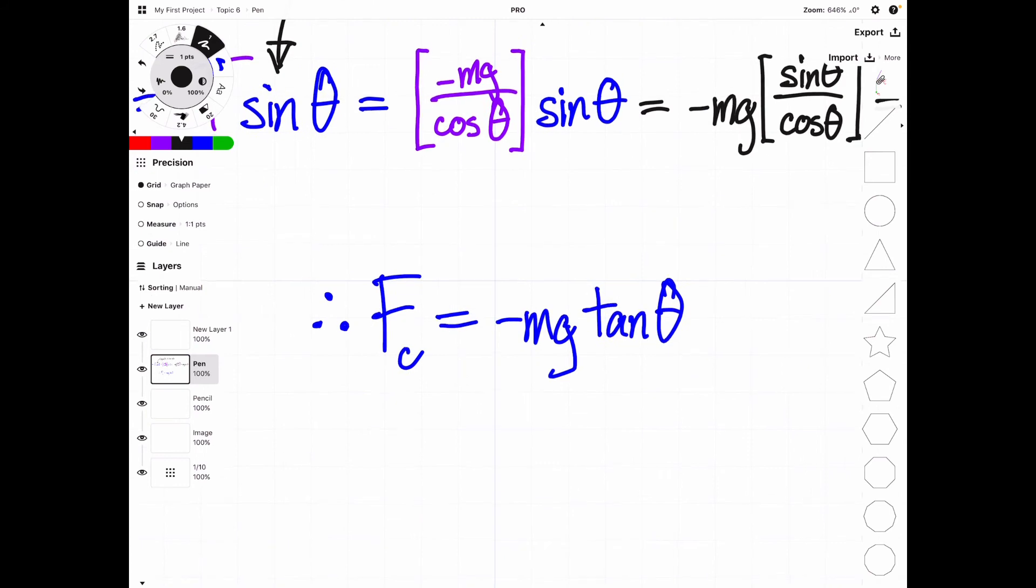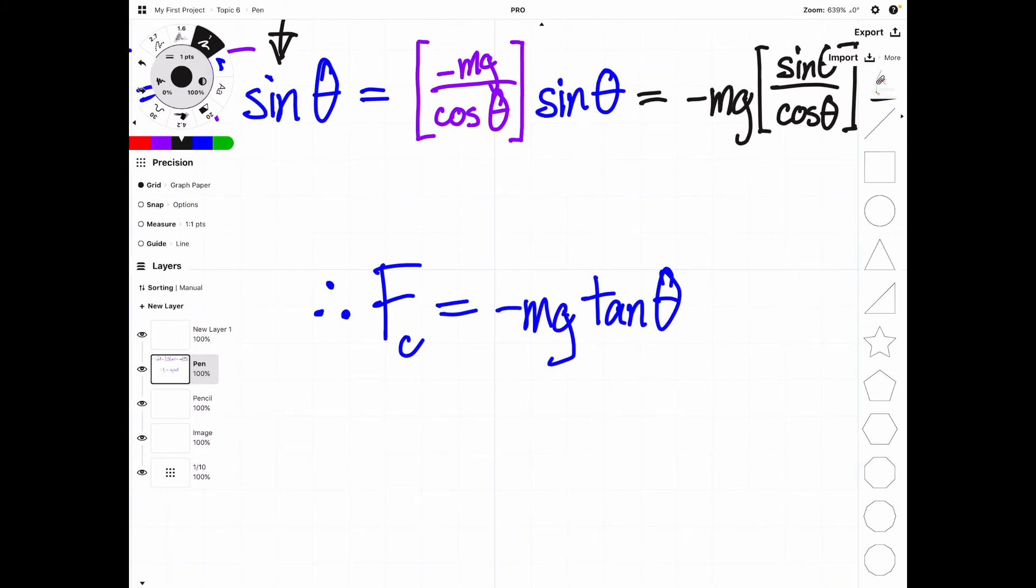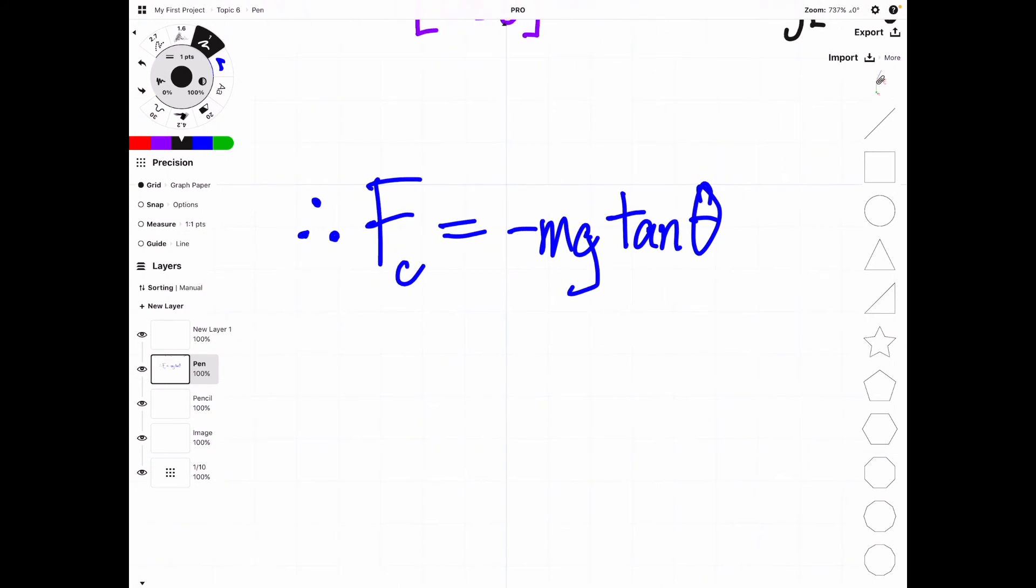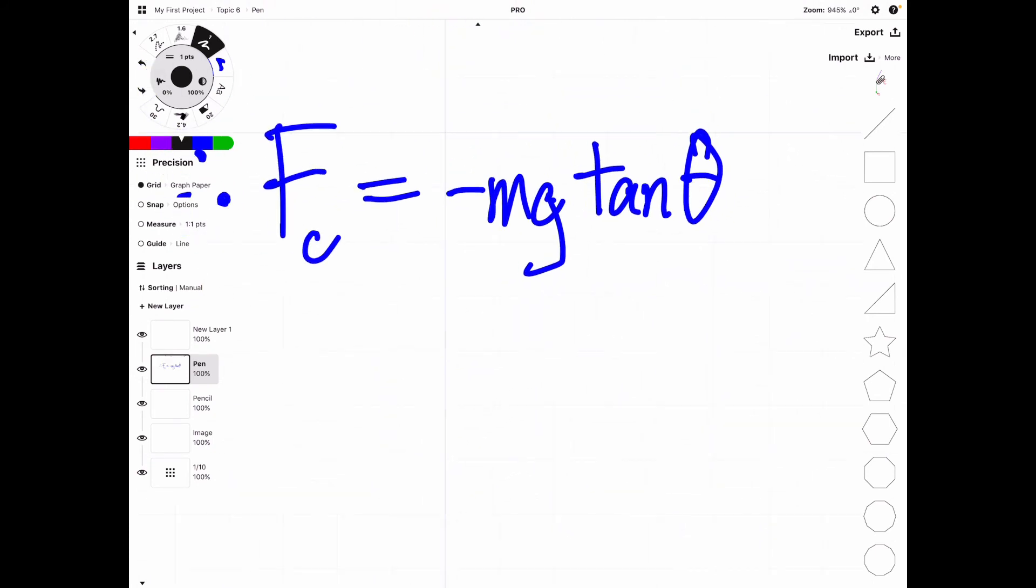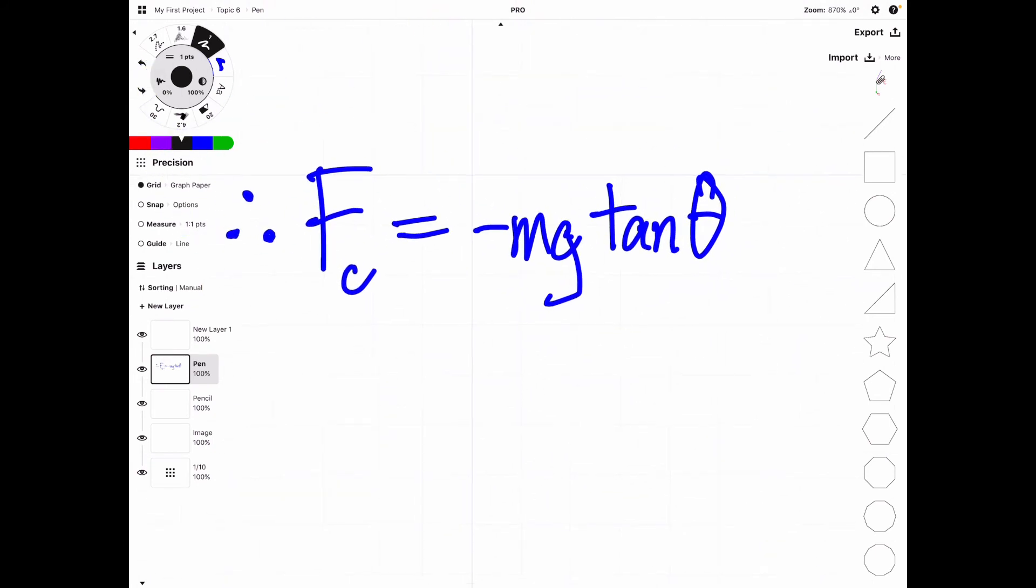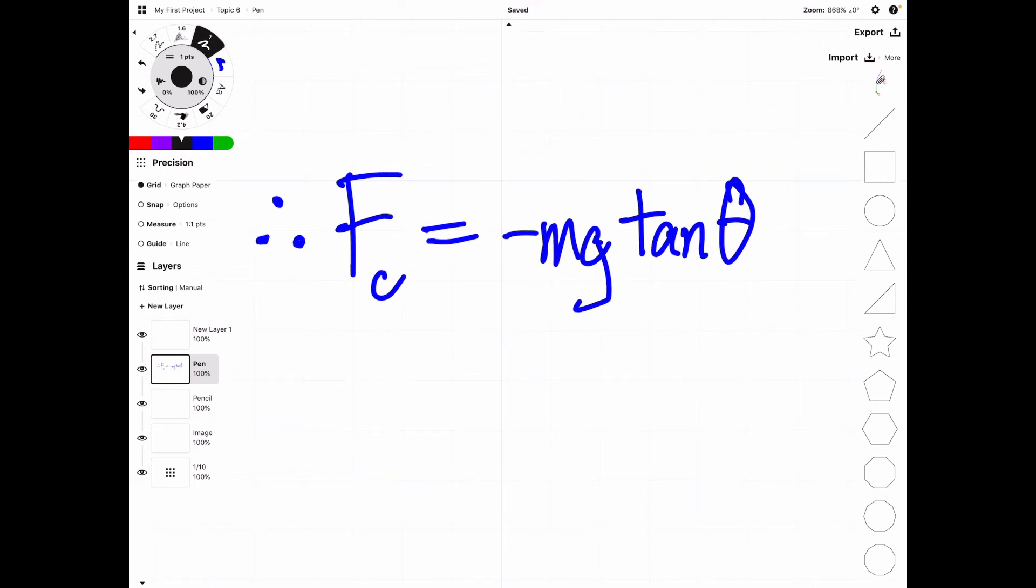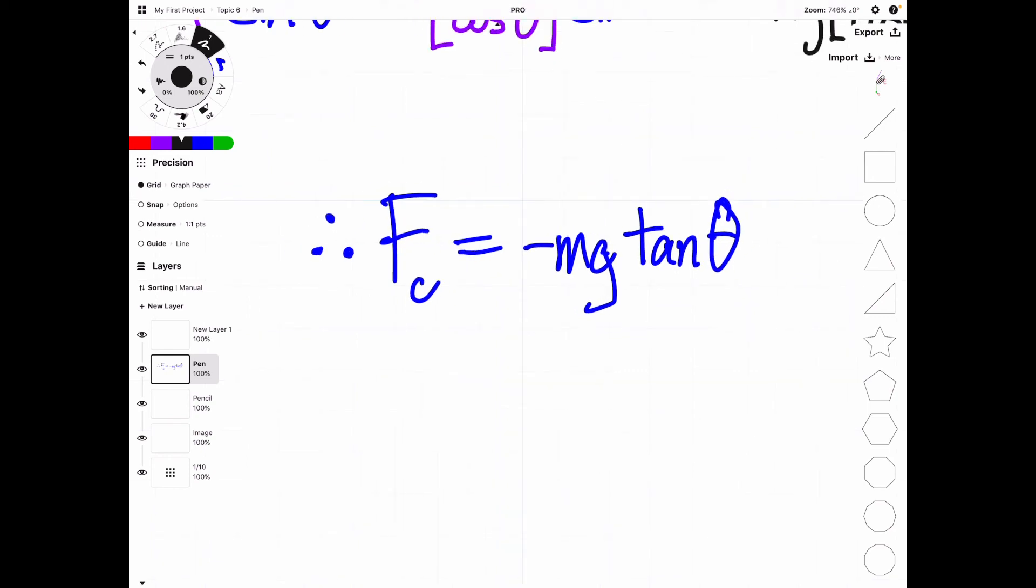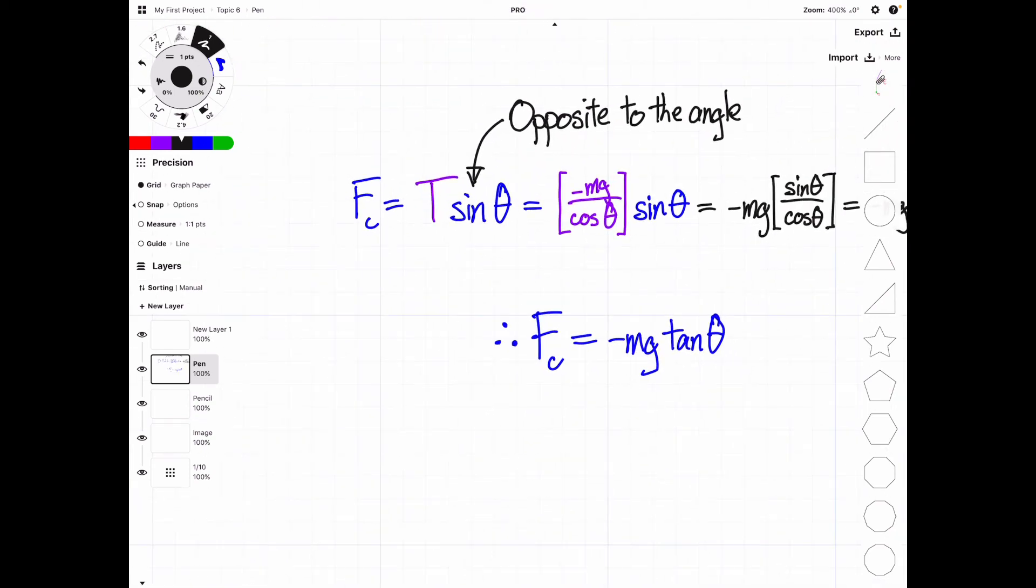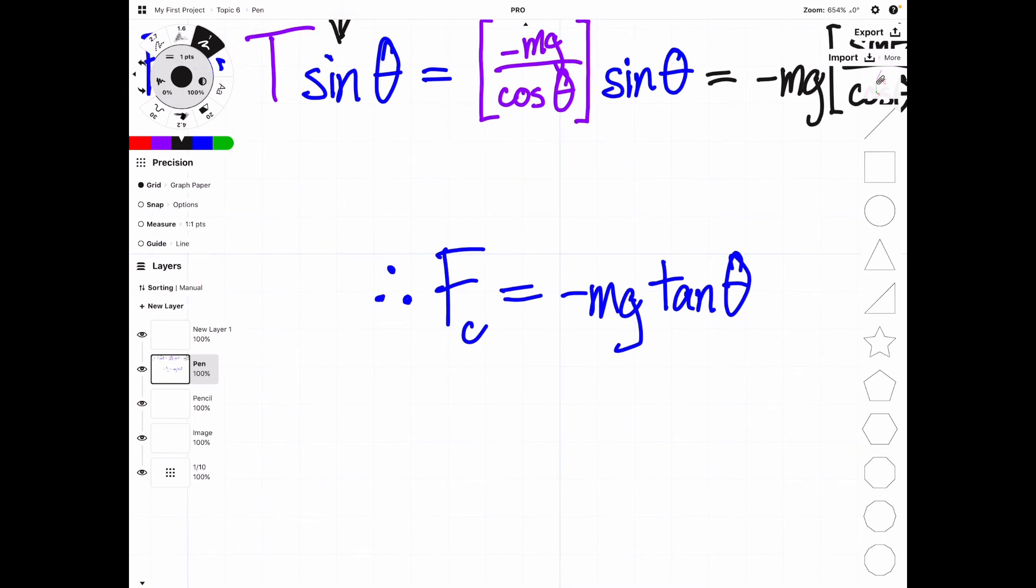So conclusion, centripetal force then is equal to negative mg tangent of theta. Gravity is a constant, so if we know our mass and we know our angle, then we can solve for centripetal force. And note again that centripetal force is just the horizontal component of tension. That's it. It is not a separate force.